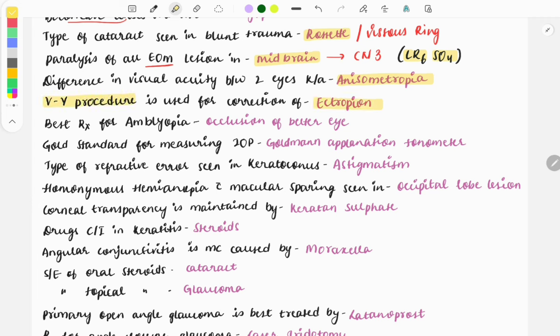The V-Y procedure is done for correction of ectropion, which means outward rolling of the eyelid. Ectropion and entropion are very important topics because images are repeatedly asked on this. I have already discussed these in the video on images, which you can find in the description box.